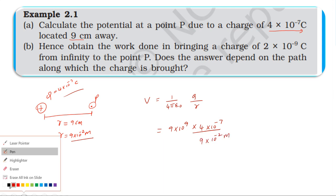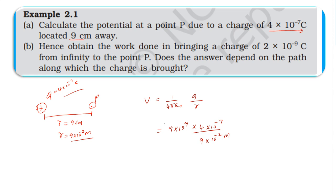Now, if we look at the cancellations: the 9 and 9 cancel. Then 10⁻⁷ and 10⁻², combined gives 10⁻⁹ in the numerator. Then 10⁻⁹ cancels, leaving 10⁴ overall. So the result simplifies to 4×10⁴.